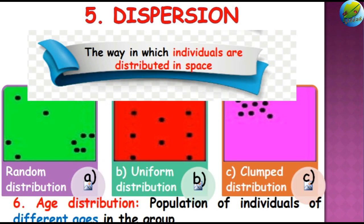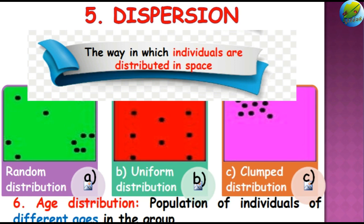The sixth attribute of the population is age distribution, which means the population of individuals of different ages in the group. For example, in insects, the first instar population, egg population, final instar population, or adult population denotes the age distribution of a particular species in a particular area.